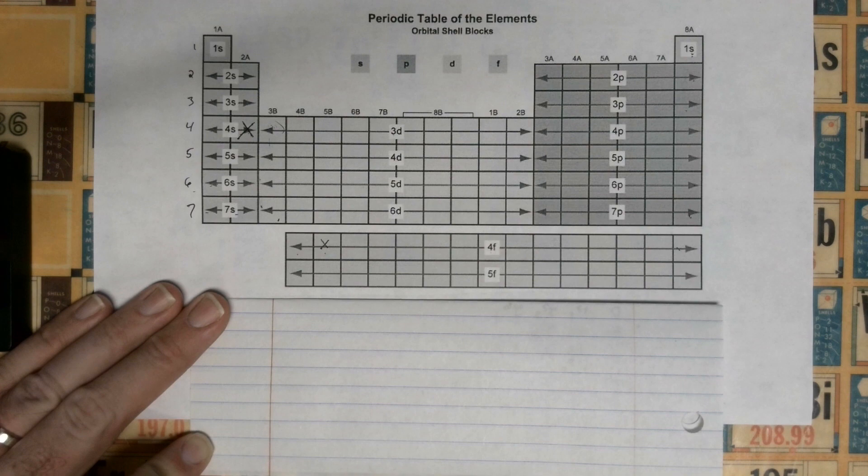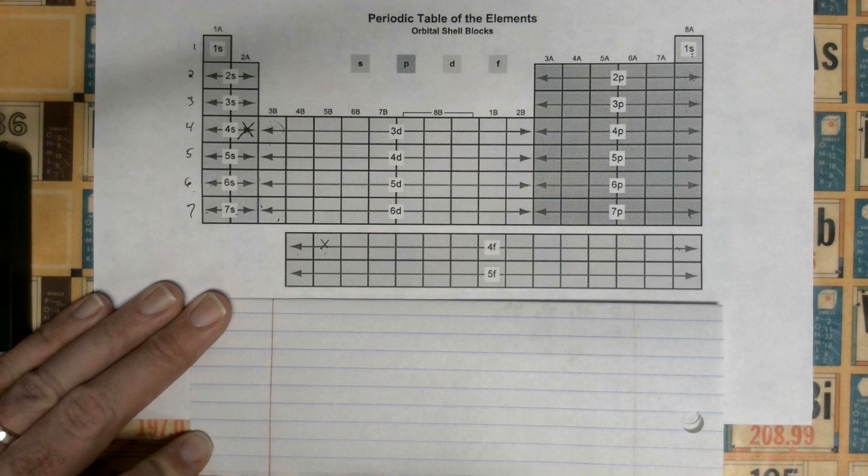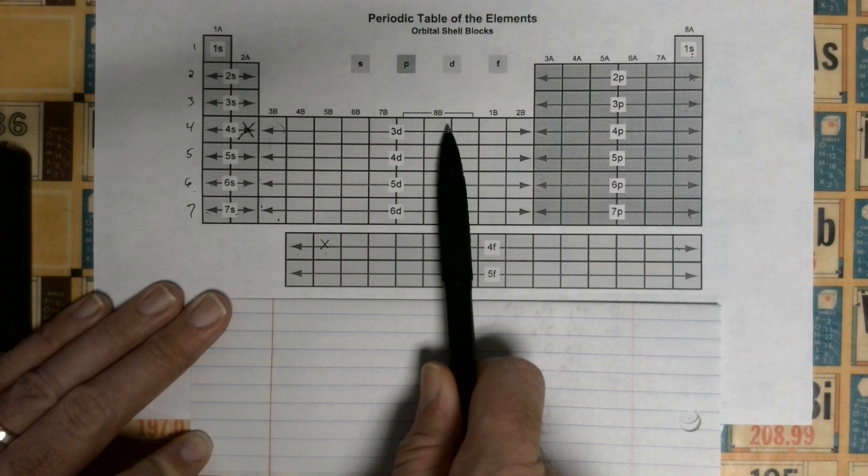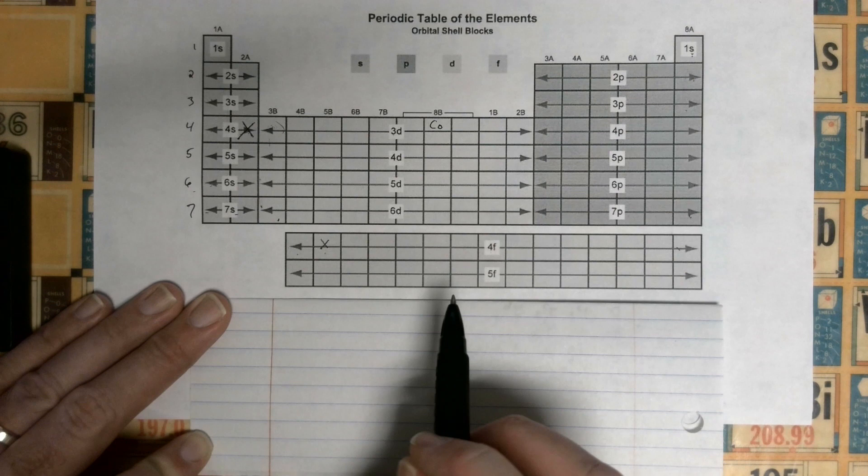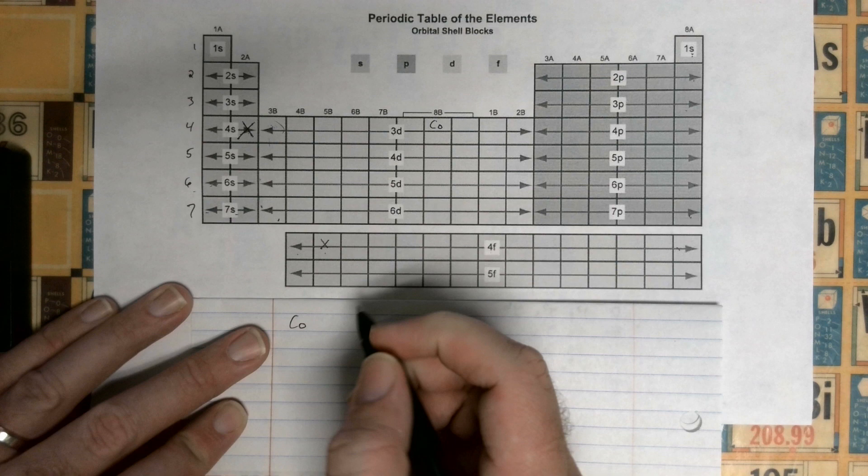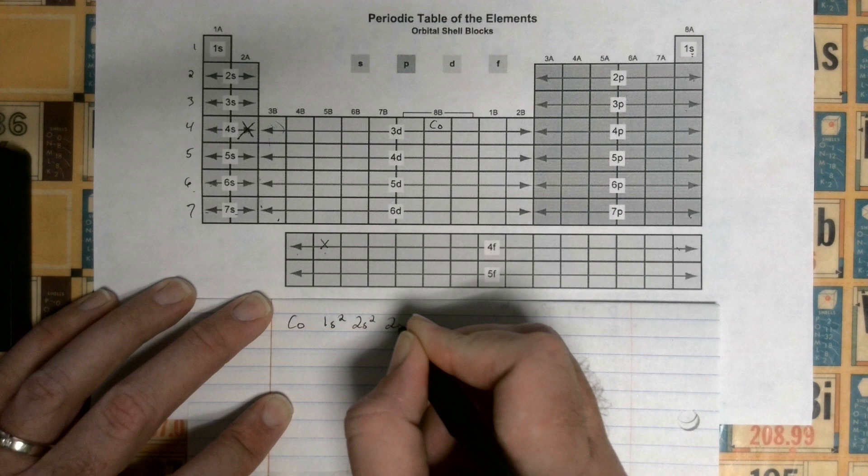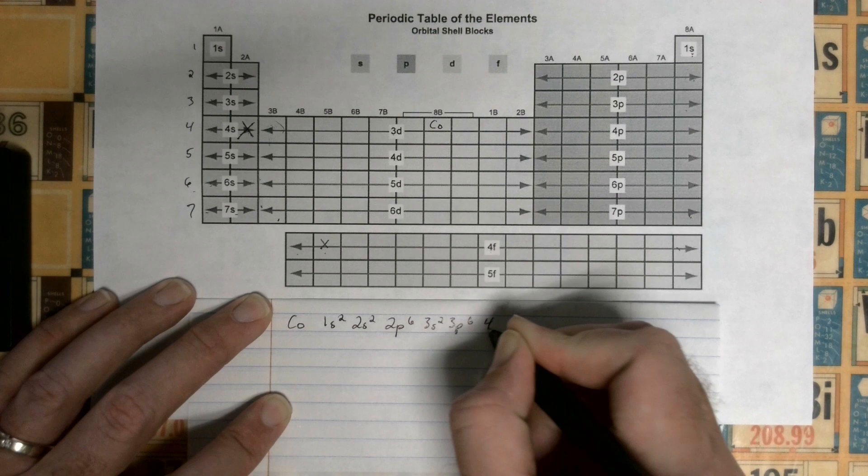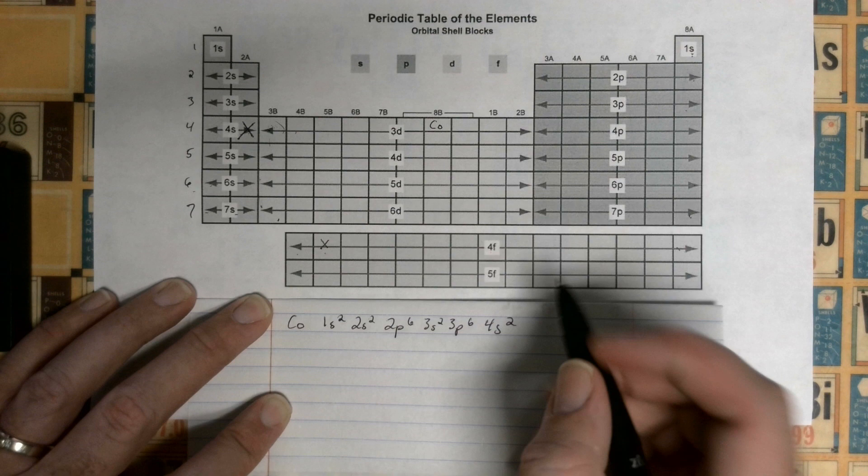If we pick an element, let's say we have Cobalt. Cobalt is number 27, and it's like right here. This is Cobalt, number 27. If I wanted to write out its electron configuration, it'd be 1s2 2s2 2p6 3s2 3p6 4s2, and then 3d7.